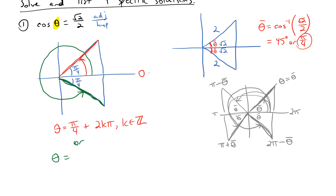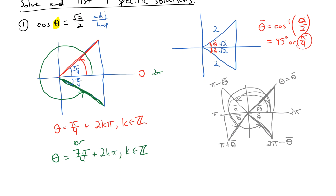For the quadrant 4 solution, rotating all the way to 2pi and backing up pi over 4 gives 2pi minus pi/4. That's 8pi/4 minus 1pi/4, which equals 7pi over 4. Adding 2k pi covers every other angle landing there, so those are all the solutions.